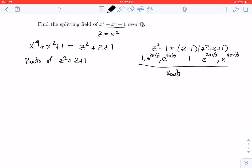For simplicity, I'll write this as alpha. This one is alpha squared. So the roots of z squared plus z plus 1 are alpha and alpha squared.